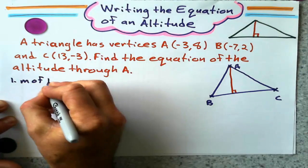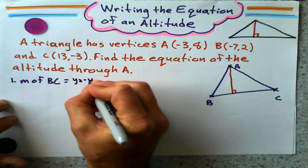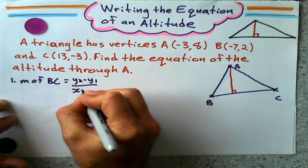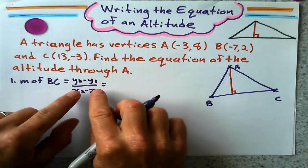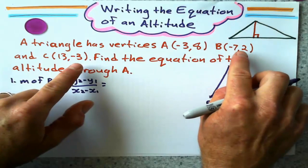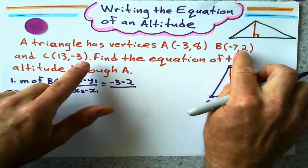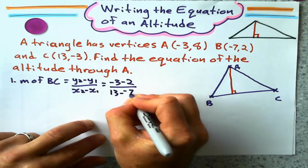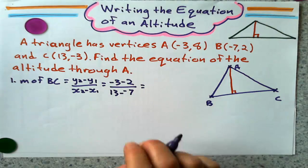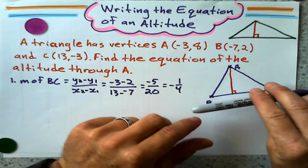So the gradient of BC, I can figure that out quite simply. That's the change in Y over change in X. And the change in Y of BC is negative 3 minus 2. Negative 3 minus 2 is the change in Y. Over the change in X, 13 minus negative 7. You get negative 5 over 20, which equals negative 1 quarter. So the gradient of BC is negative 1 quarter.